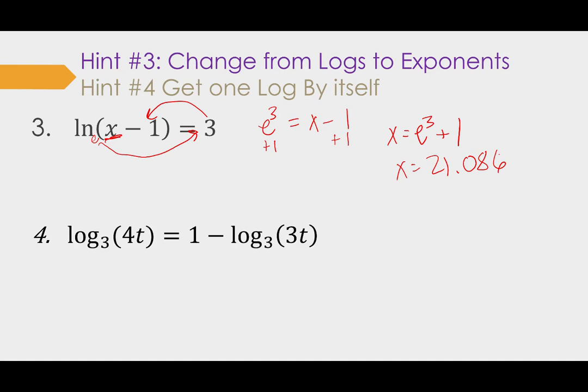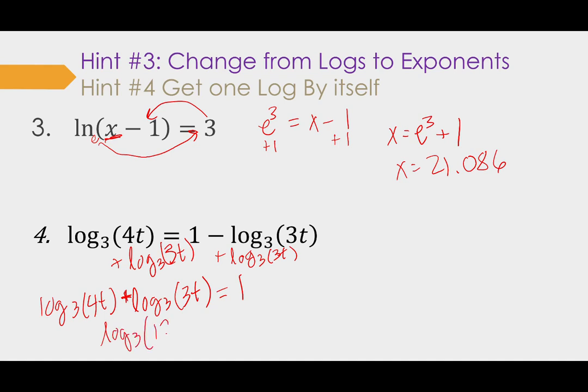Hint number four. Get one logarithm by itself on one side. This one has, this problem has two logarithms. So I'm going to move one of them over. It doesn't matter which one, but it's less work to move this one over to the other side. And you want to make sure you take that whole thing when you bring it over. So I have log base 3, 4t plus log base 3 of 3t equals just one now since I moved it over. Now using our product property, I know that addition becomes a multiplication inside of a logarithm. So I have log base 3 of 4t times 3t, which is 12t squared, equals one. Going back to hint number three, I can change from logarithm to an exponent. So that's going to be 3 to the first power, which is just 3, equals 12t squared. What's inside?